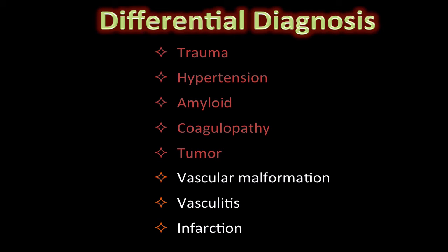Classical examples of tumors presenting with hemorrhage include metastatic deposits from renal cell carcinoma, choriocarcinoma, melanoma, or thyroid cancer. Vascular malformations are always a valid concern when intraparenchymal hemorrhage is seen, especially in young patients. Vasculitis could present as unifocal or multifocal intraparenchymal bleeds.